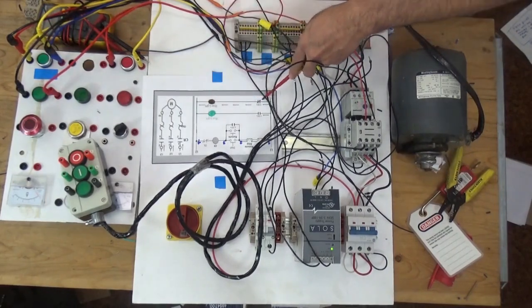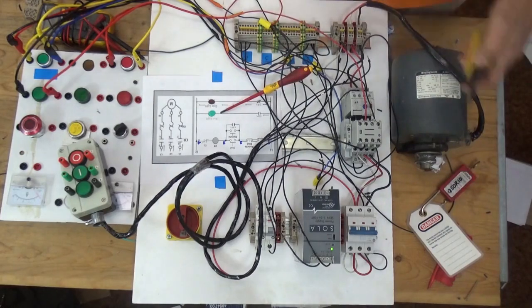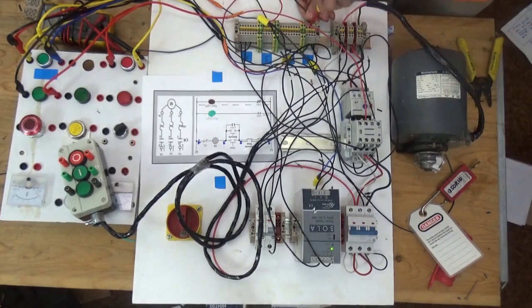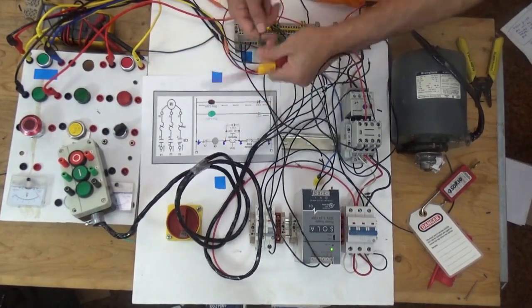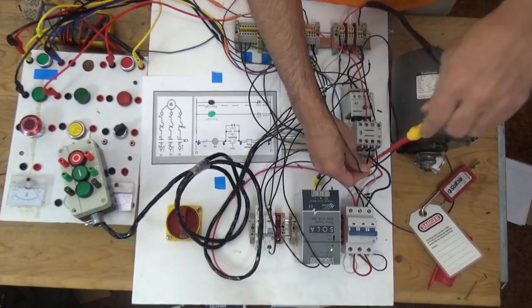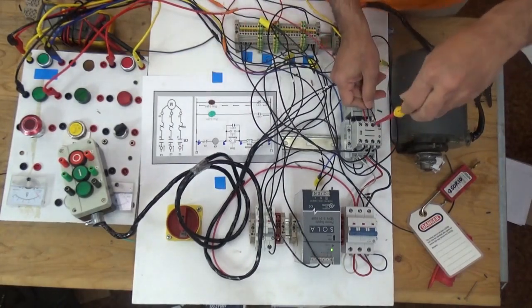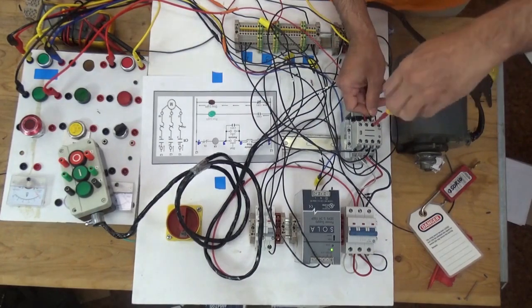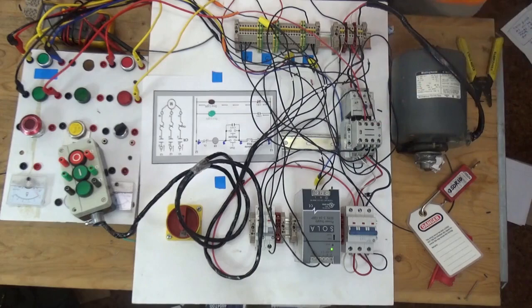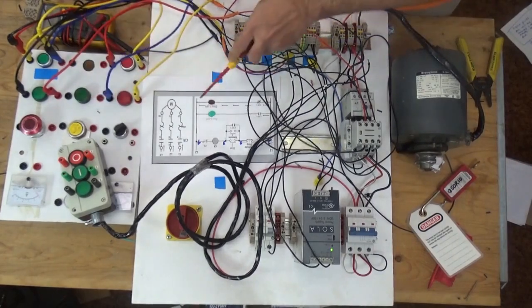When you stop, it should go away. Next we're going to connect the normally closed for our stop indication light. From line 1 going to our normally closed. From our normally closed going to the light. From our two lights going to line 4.